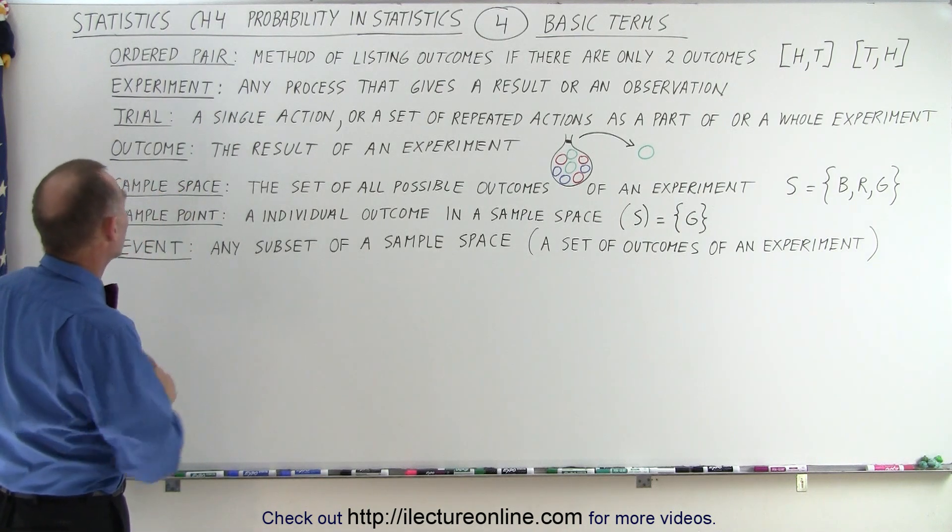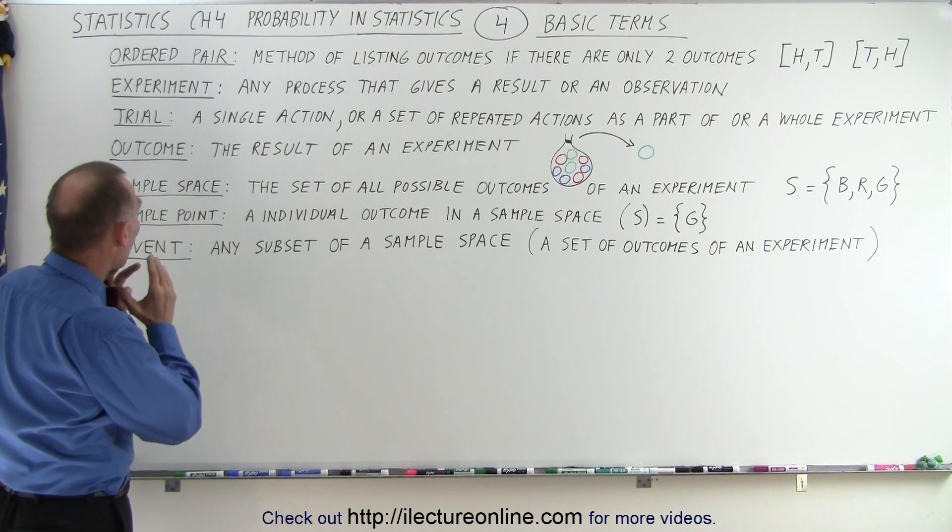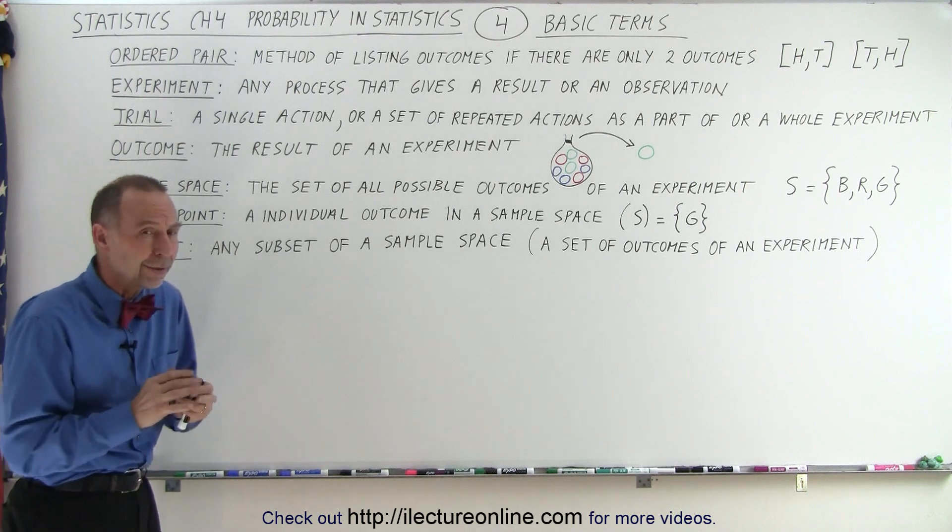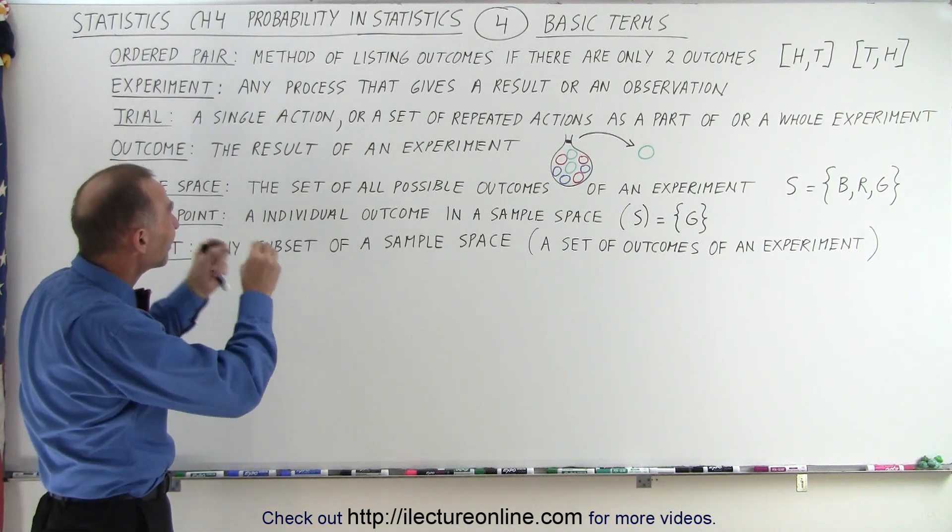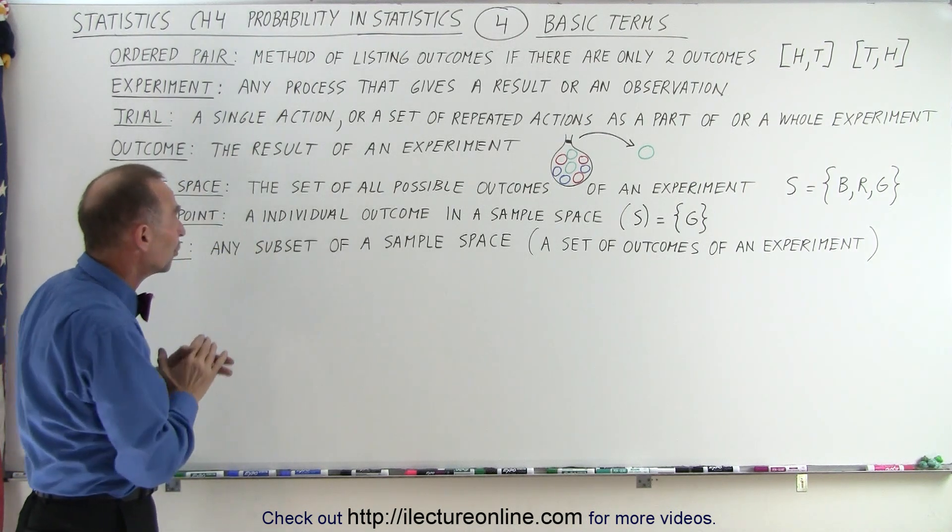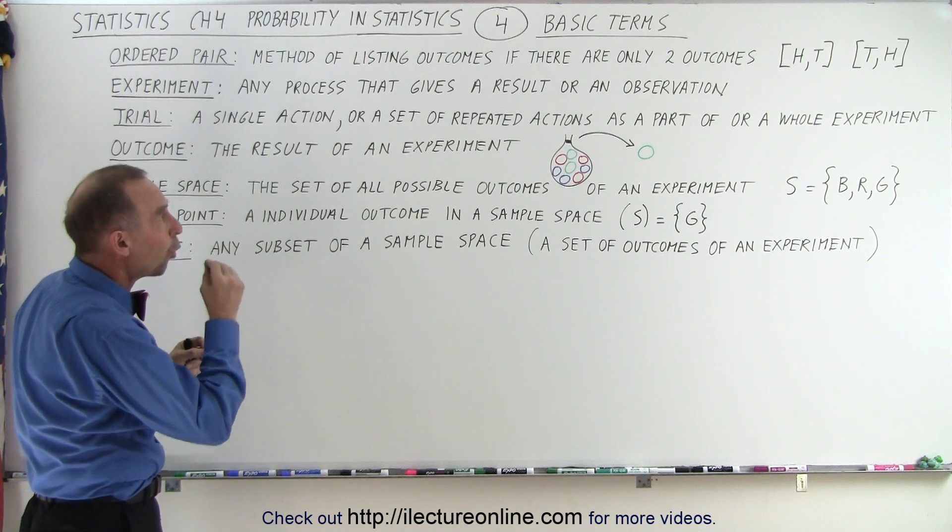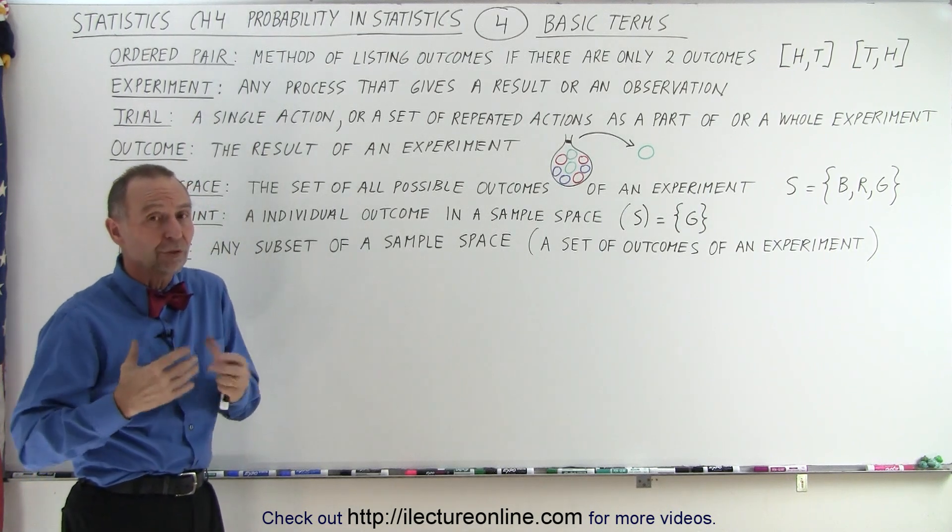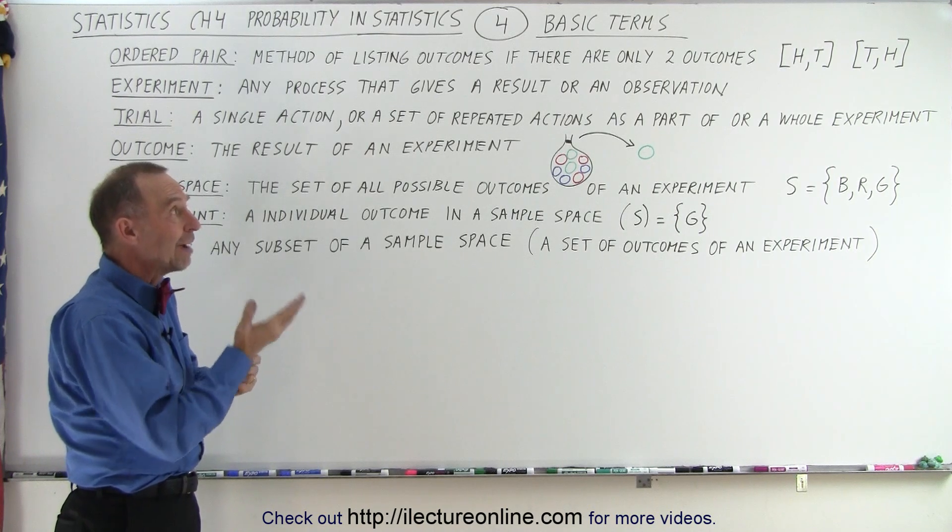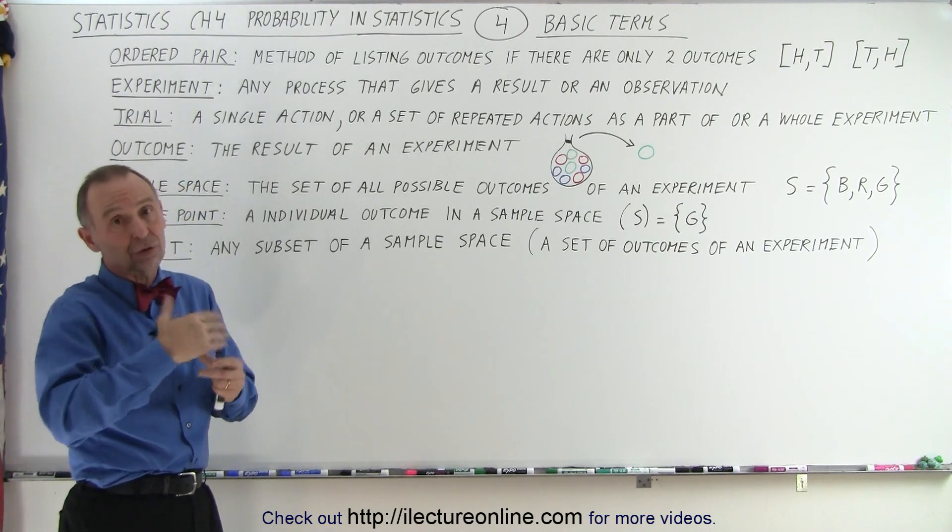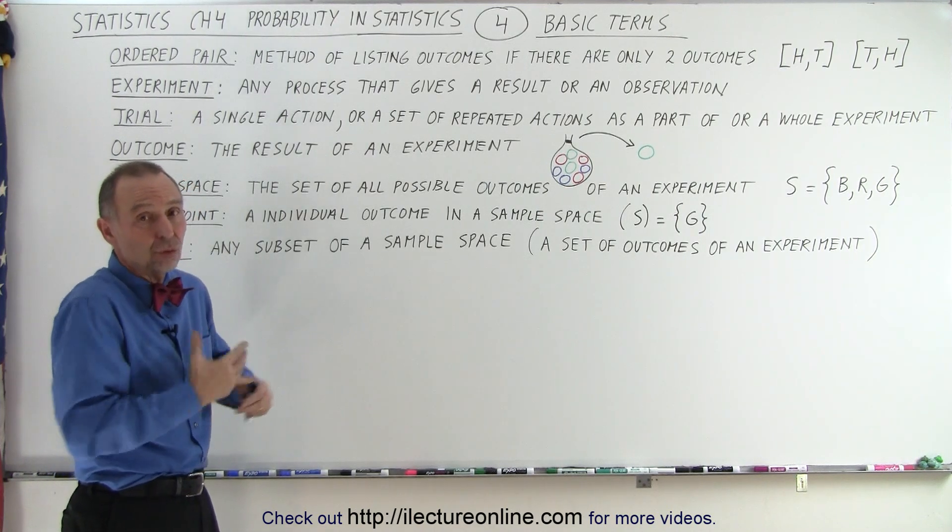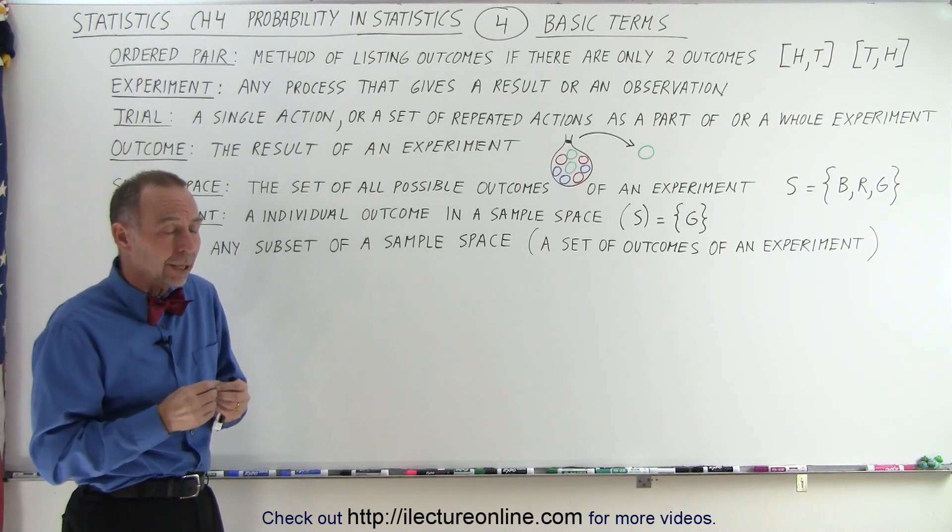But at least we should be familiar with this. First of all, an ordered pair. An ordered pair is a method of listing outcomes, and we'll talk about the term outcome if there are only two possible outcomes. For example, when we toss a coin, we can have heads or tails, or tails or heads, two heads, two tails, two possible outcomes.